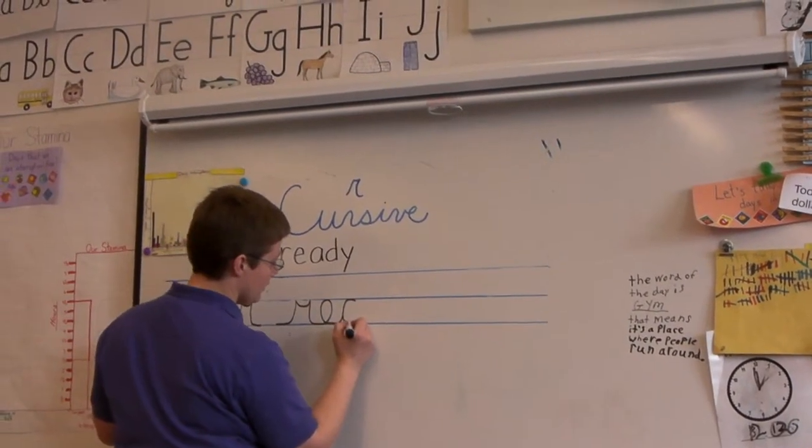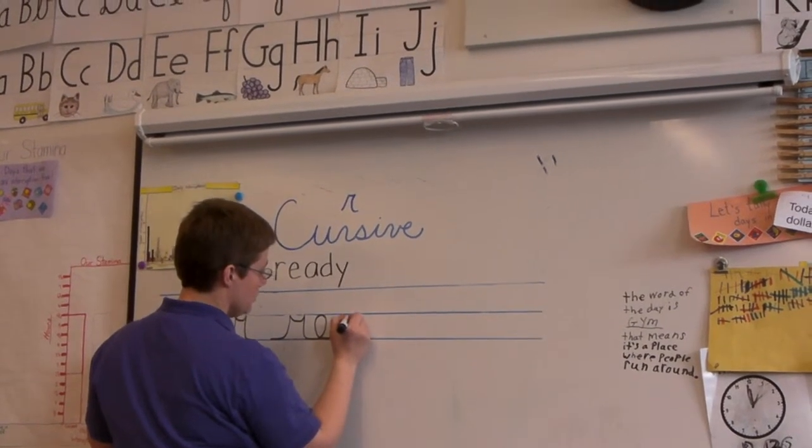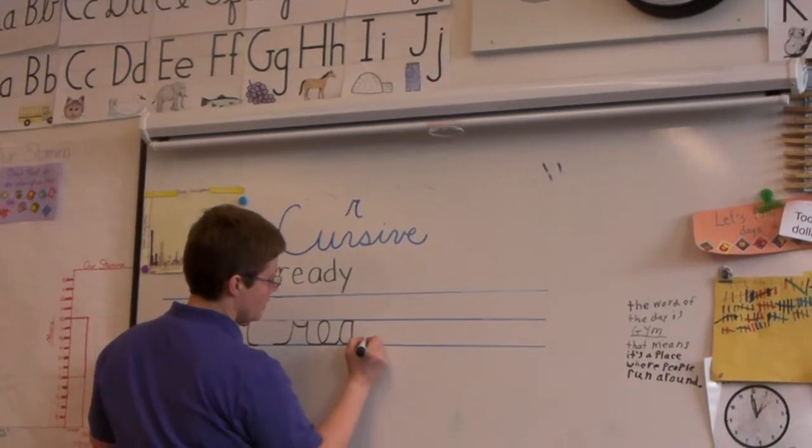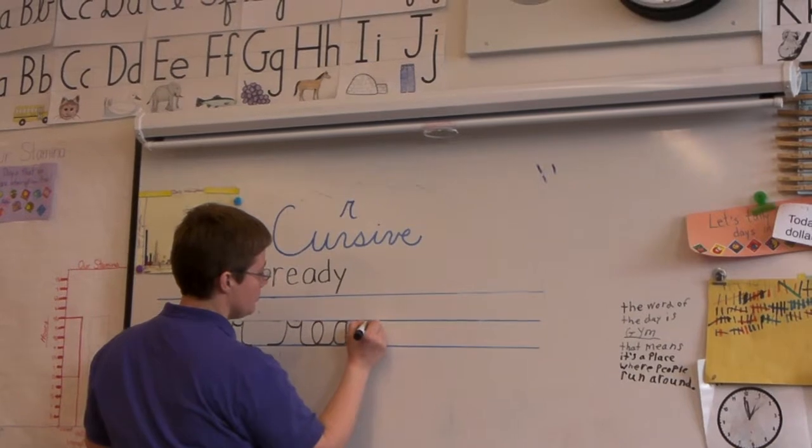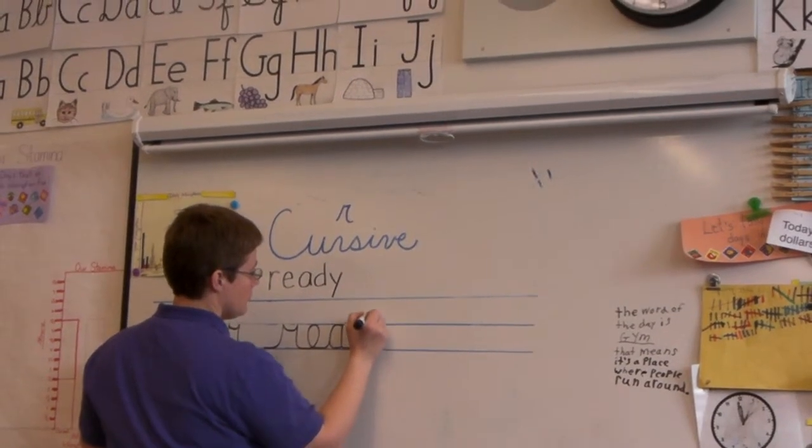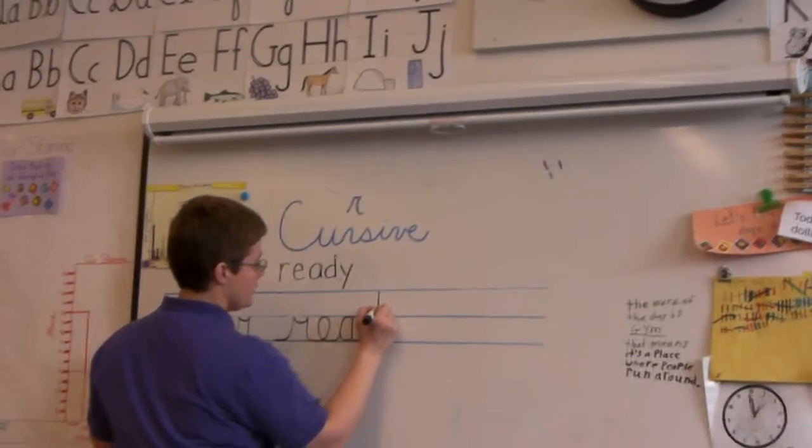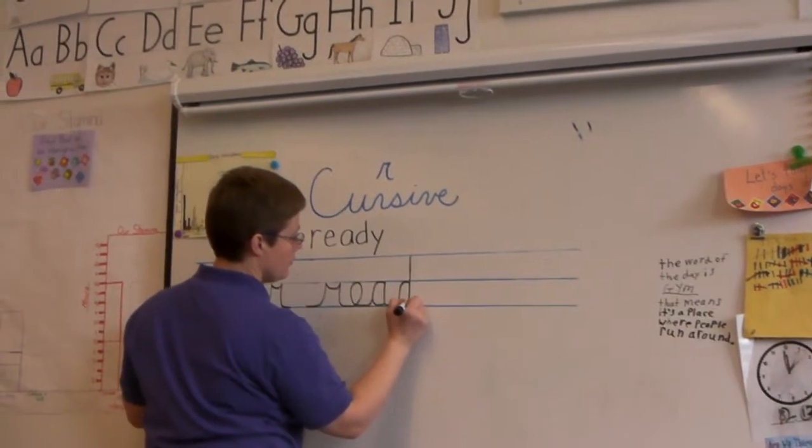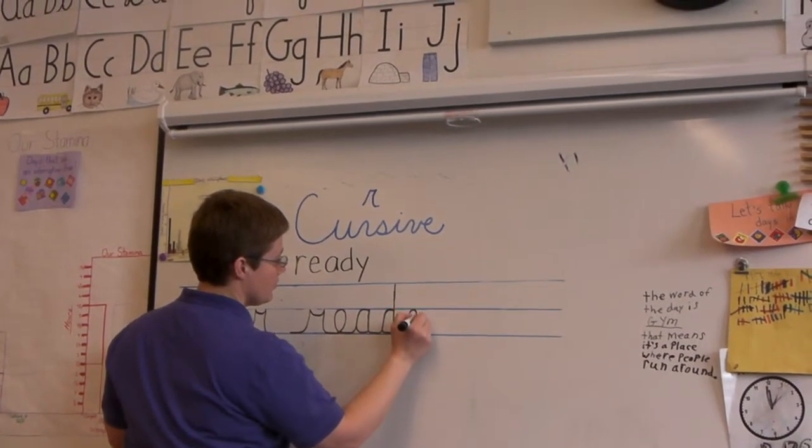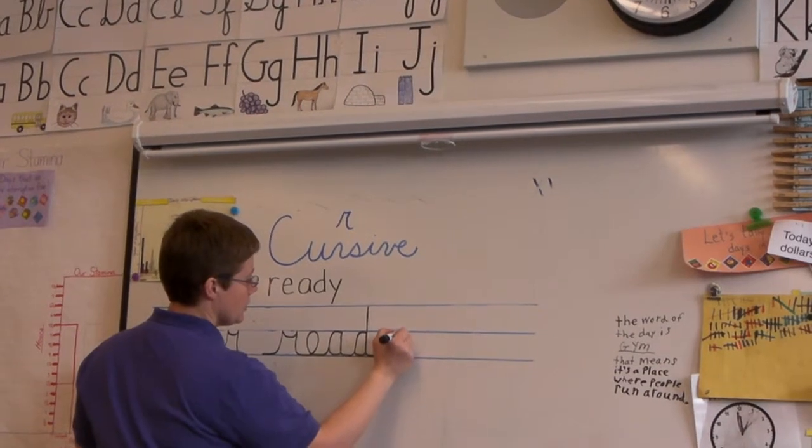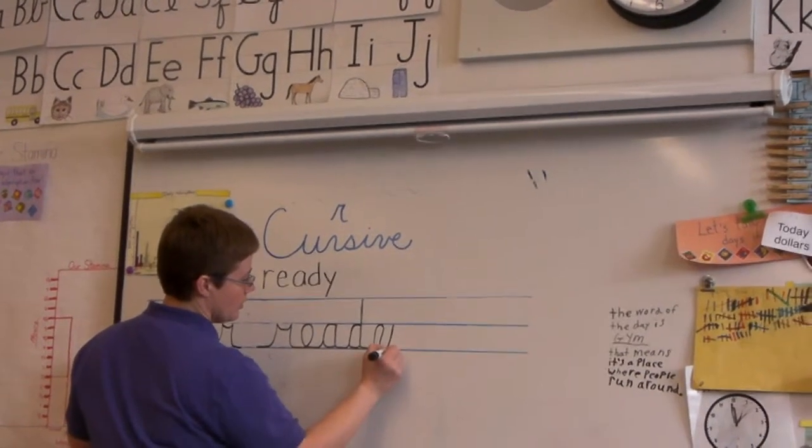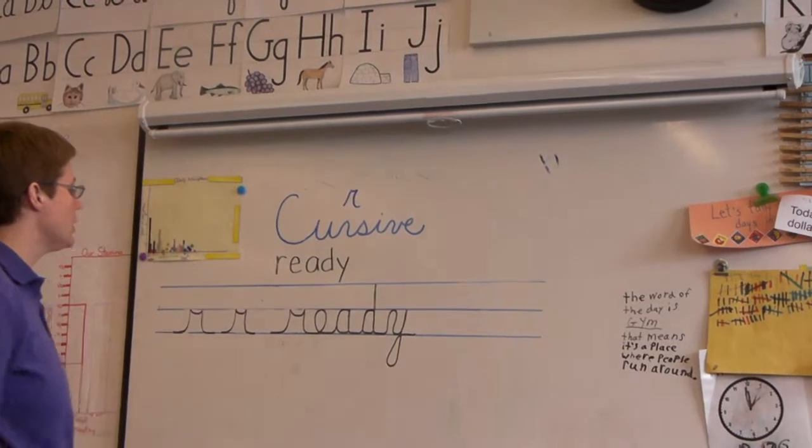And see, I'm being very careful. I'm staying right on the same line. Up. A. And then come across. D. Up, down, same line. And then we're going to do a Y. Up. So ready is a good word for you to practice because it has five different letters in it that you've learned. Okay? So that's the word ready.